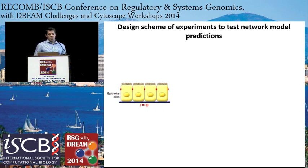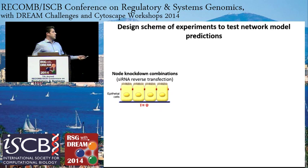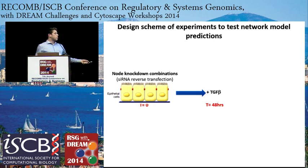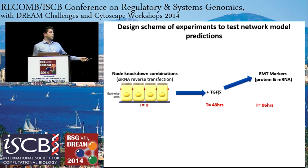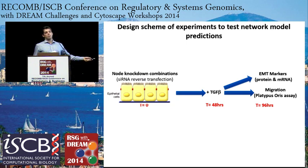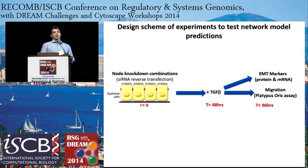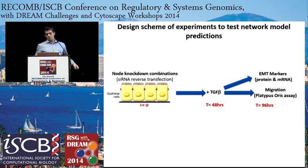Next I did this combination siRNA screen—it's a small screen. We took epithelial cells and did siRNA knockdowns in combination, waited some period of time, then added TGF-beta, then measured EMT markers by protein and mRNA expression. We also looked at migration, which is a functional readout of EMT—cells undergoing EMT are more migratory. I will say that I made an error in that part of the assay, which I'm going to repeat in the near future.